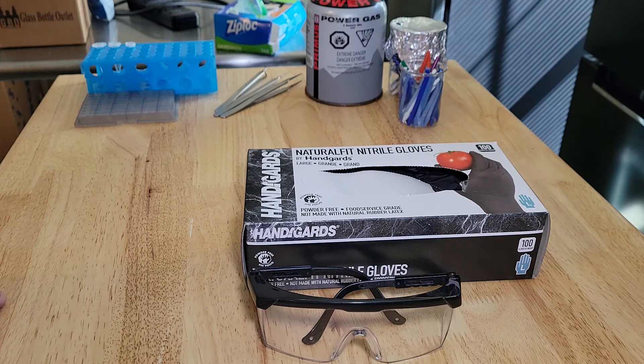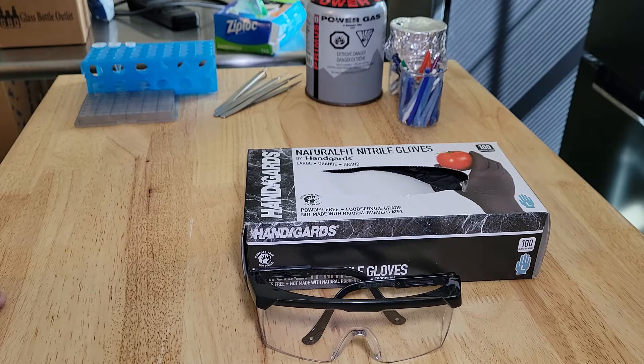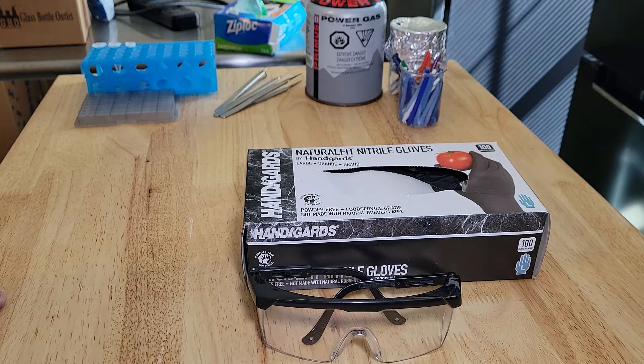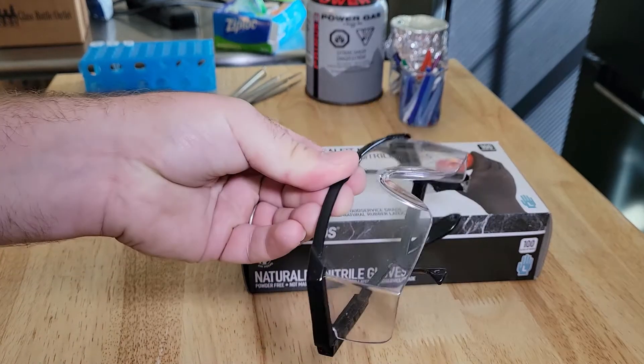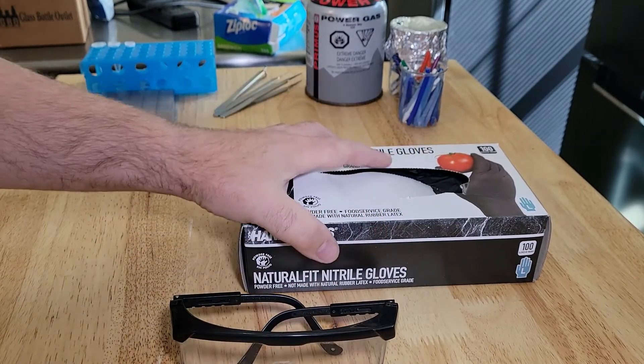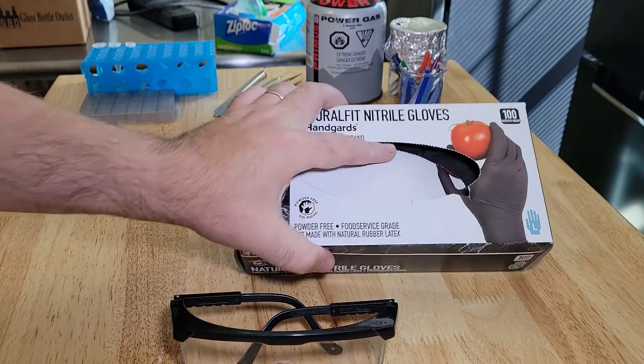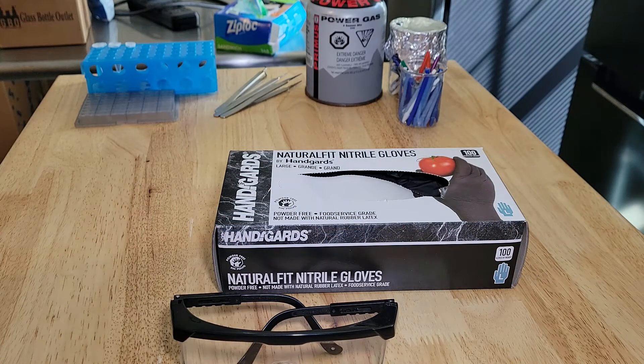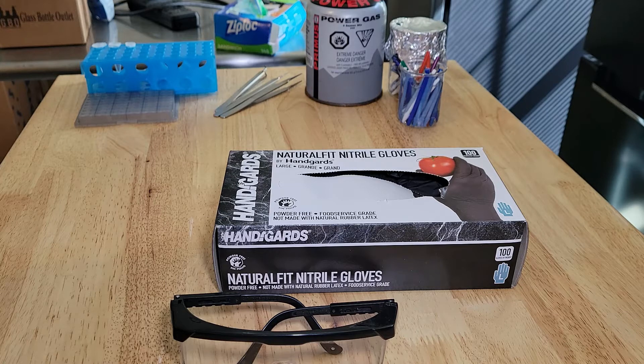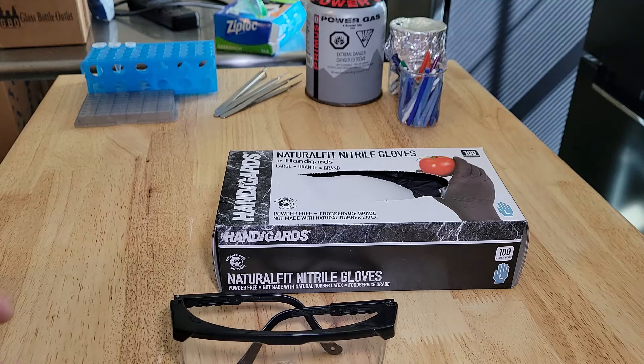The first step in all lab work, whether you're in school or at home, is safety. Make sure you're wearing your safety glasses with splash-proof sides and nitrile gloves. Those will protect you from the bleach we're going to use. The other chemicals we're using are not particularly dangerous, but you want to be safe anyway.